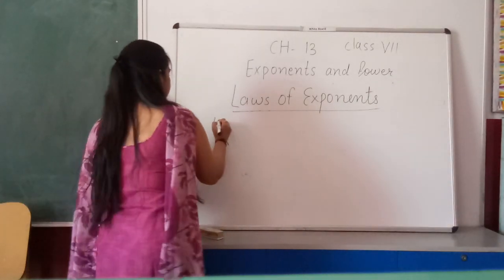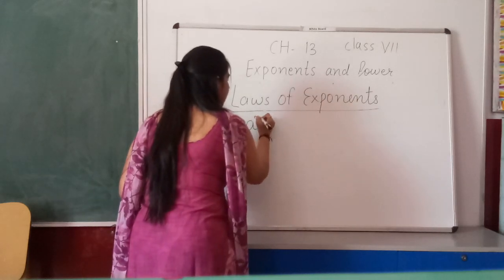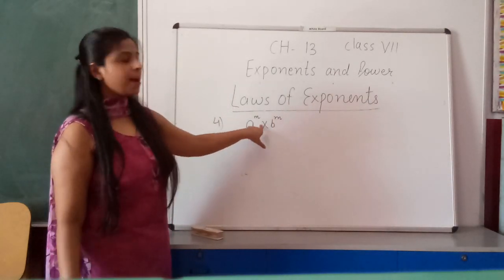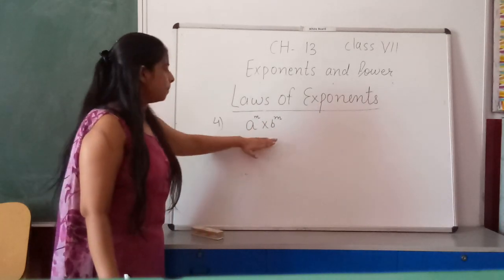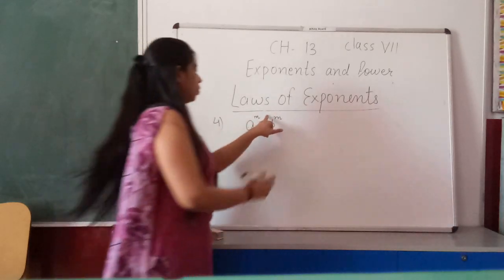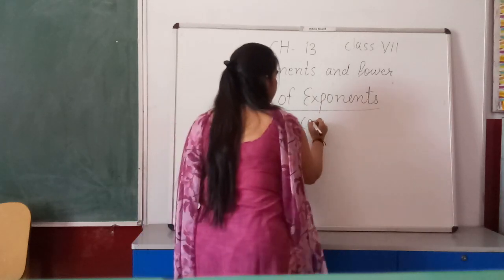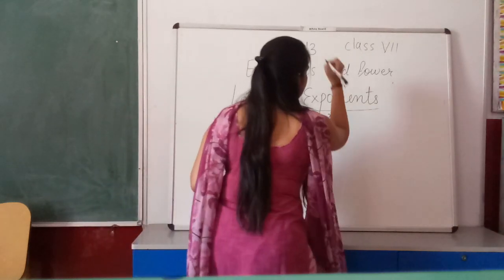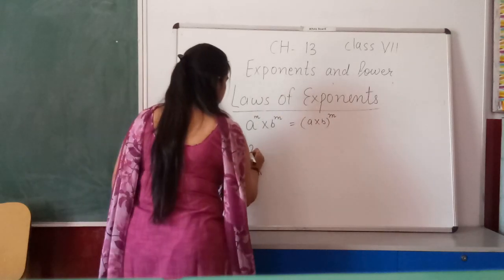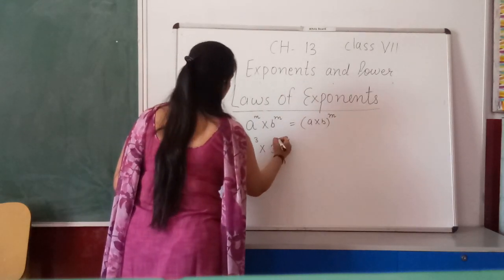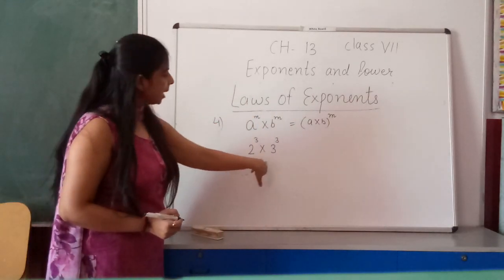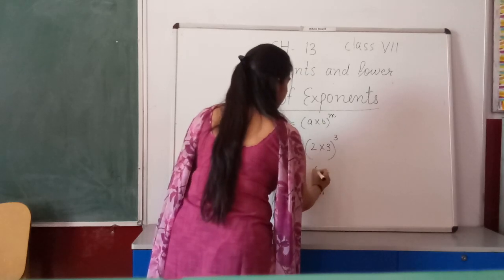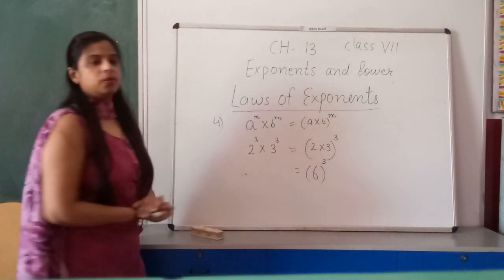The fourth law of exponents: a raised to power m multiplied by b raised to power m. Here the base is different but the power is the same. We multiply both bases together and keep the same power. The result is (a × b) raised to power m. For example, 2³ × 3³ = (2 × 3) raised to power 3 = 6 raised to power 3. This is the fourth law.